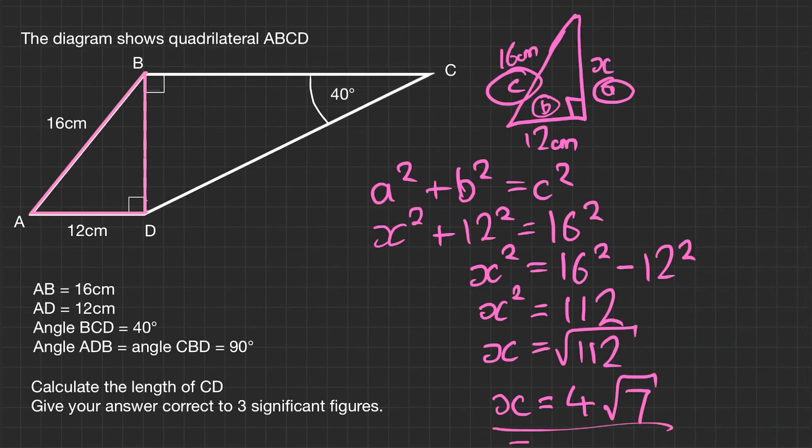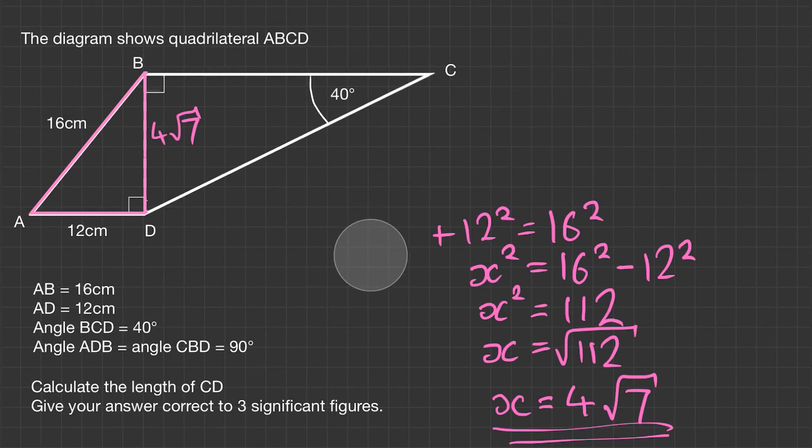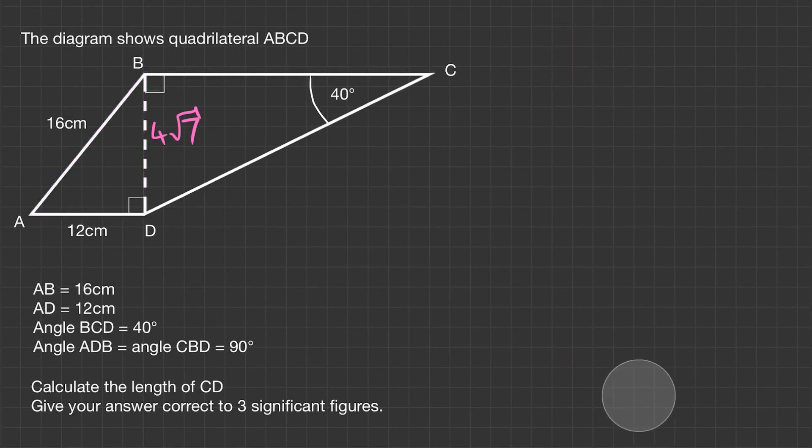Now, I would leave this in this format alone. And the reason being is this is a very specific number. It's not rounded. It gives you a more accurate answer at the end. So I'm going to write this as 4 root 7. And now we've got the vital side we need, we can move on to the next part of finding length CD.